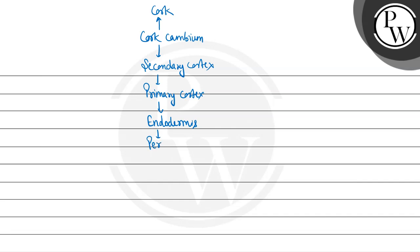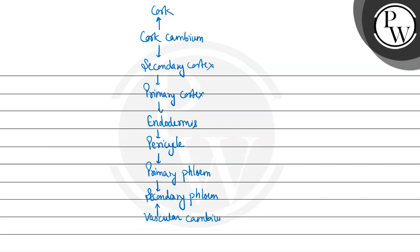Inside that is the pericycle. On the inner side of pericycle is present primary phloem. On the inner side of primary phloem is present secondary phloem. And the secondary phloem is produced by the vascular cambium — on one side it makes secondary phloem.